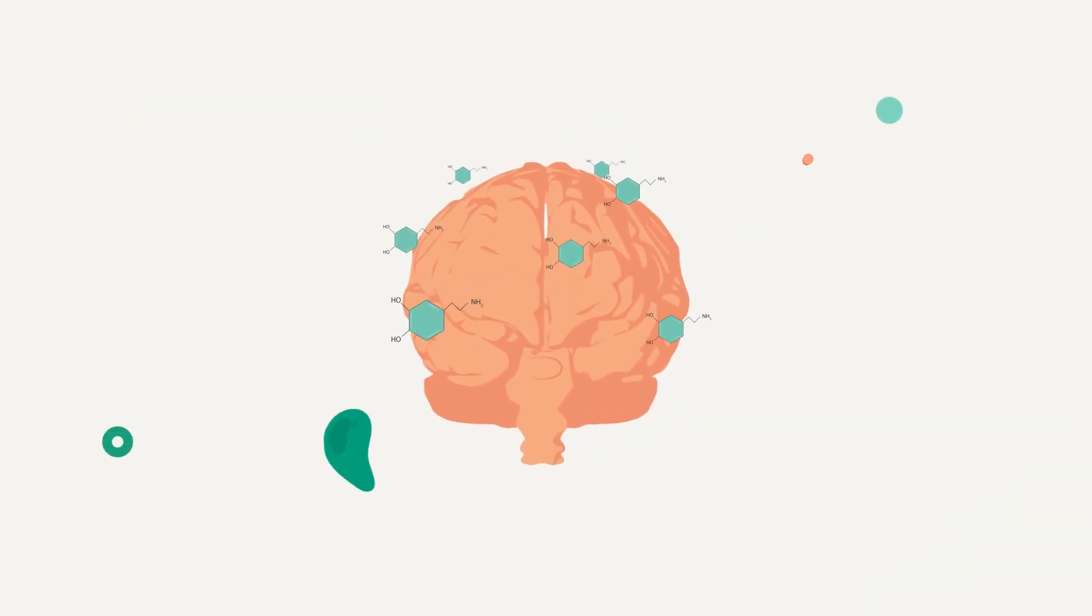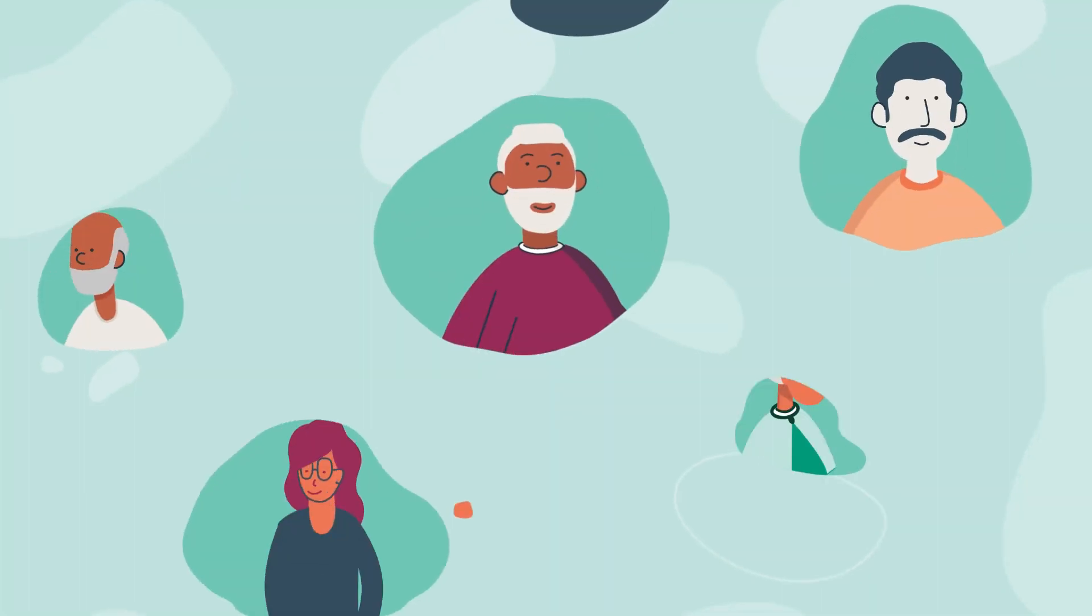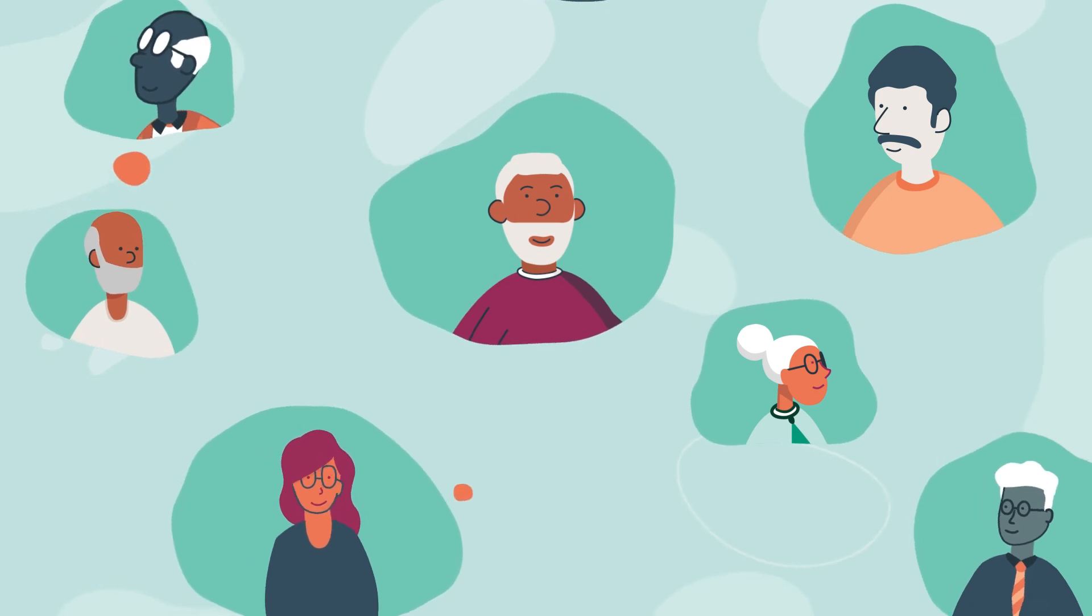With more enzymes present, more dopamine is expected to be available in parts of the brain that control movement. By increasing dopamine levels, Parkinson's symptoms become more manageable again.